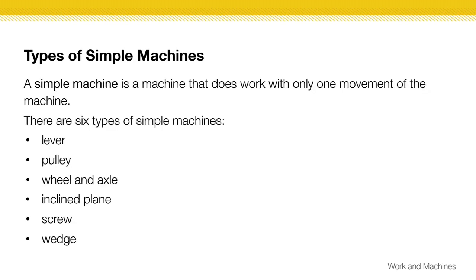Simple machines do work with only one movement, so there's not a lot of complex things going on like a bicycle. There are six types: levers, pulleys, wheels and axles, inclined planes, screws, and wedges. Screws and wedges fall underneath the category of inclined planes. We're going to be talking about those today. Next lesson, we're going to talk about the others.